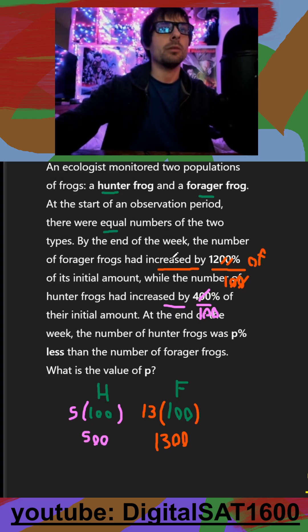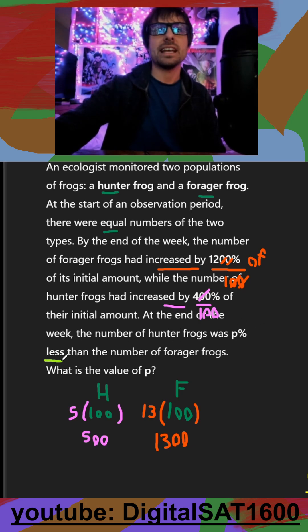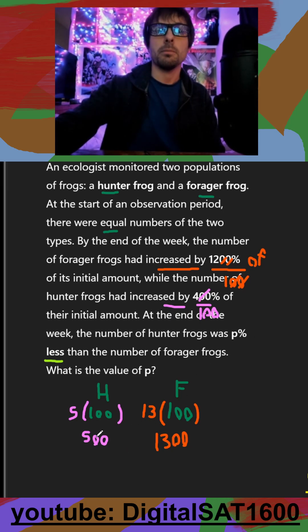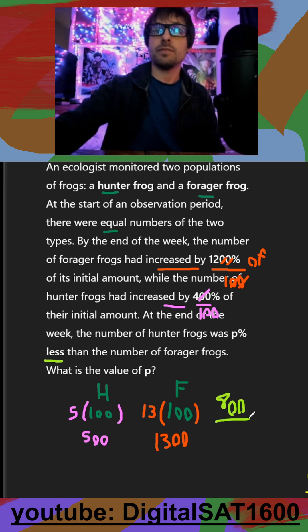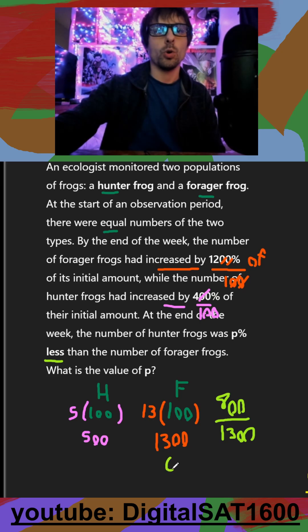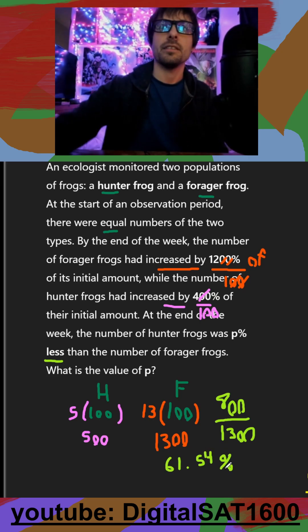Finally, they want us to find that hunter frogs are P% less than the number of forager frogs. First, get the numerical difference: 1,300 minus 500 gives an 800 difference. Then divide by the forager frog total: 800 divided by 1,300 gives 0.6154, or 61.54% — that's how much less the hunter frogs are compared to forager frogs.